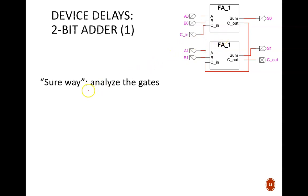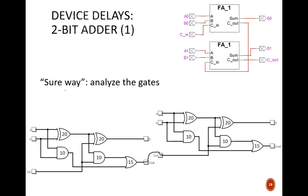We'll discuss a couple different approaches. The first one is what I'm calling the SURE way, and I put that in quotes because of all the assumptions built into our analysis. This SURE way is to break down the given devices into their component gates, and then do a gate-by-gate analysis, just like the previous video.